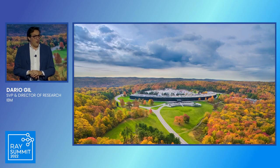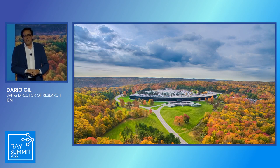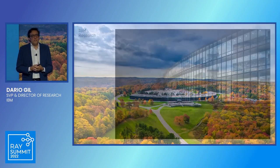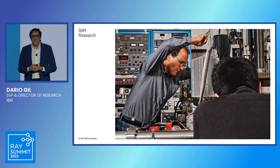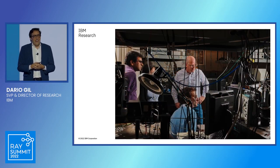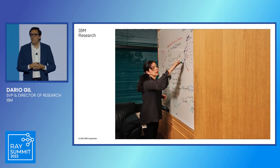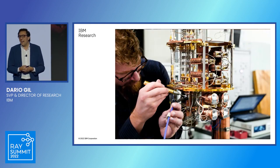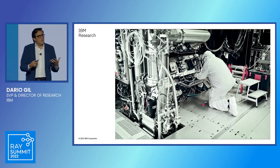I'd like to start by telling you where I work. We're in beautiful San Francisco — this is the beautiful location that serves as the research headquarters of IBM, about 45 minutes north of New York City, in a building designed by Eero Saarinen. It serves as the headquarters of a global community of research. IBM Research has been one of the premier industrial research organizations in the world for almost 80 years, a community of about 3,000 scientists and engineers, mathematicians, experts in computer science, quantum information, semiconductor technology, and a whole variety of disciplines.